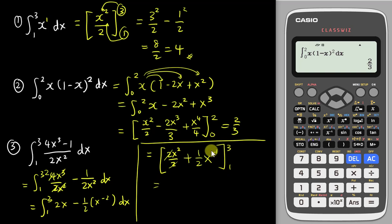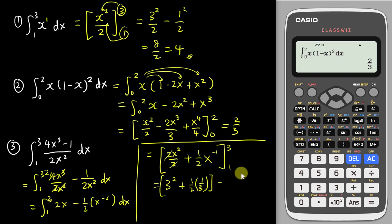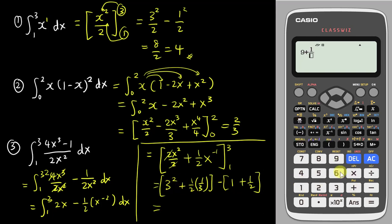Substituting 3: three squared plus one-half times three to the negative one equals 9 plus one-sixth. Substituting 1: one squared plus one-half times one to the negative one equals 1 plus one-half. So the result is nine plus one-sixth minus one minus one-half, which gives 9 plus 1 over 6 minus 1.5, equaling 23 over 3.